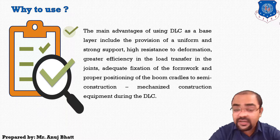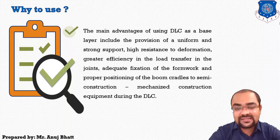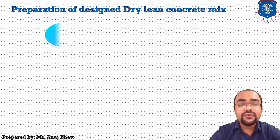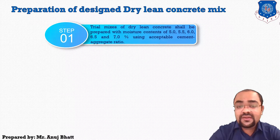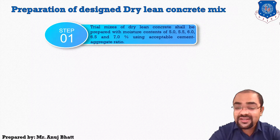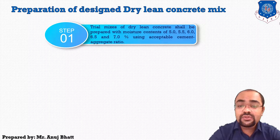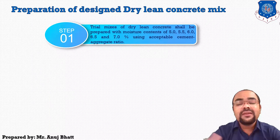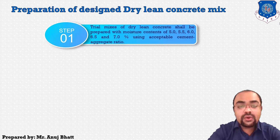The next topic is the preparation of designed dry lean concrete mix. How do we design this dry lean concrete? For that, we follow step one: trial mixes of dry lean concrete shall be prepared with different moisture content percentages and different cement-aggregate ratios. Those percentages are 5%, 5.5%, 6%, 6.5%, and 7%. We can prepare the DLC using this variety of cement-aggregate ratios.